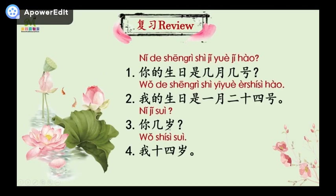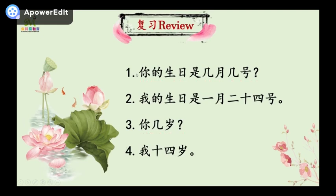You look at the pinyin and read the sentences by yourself. 一，你的生日是几月几号？二，我的生日是一月二十四号。三，你几岁？四，我十四岁。Now without pinyin, we'll read again. 一，你的生日是几月几号？What's the date of your birthday? 二，我的生日是一月二十四号。My birthday is on January 24th. 三，你几岁？四，我十四岁。I'm 14 years old.